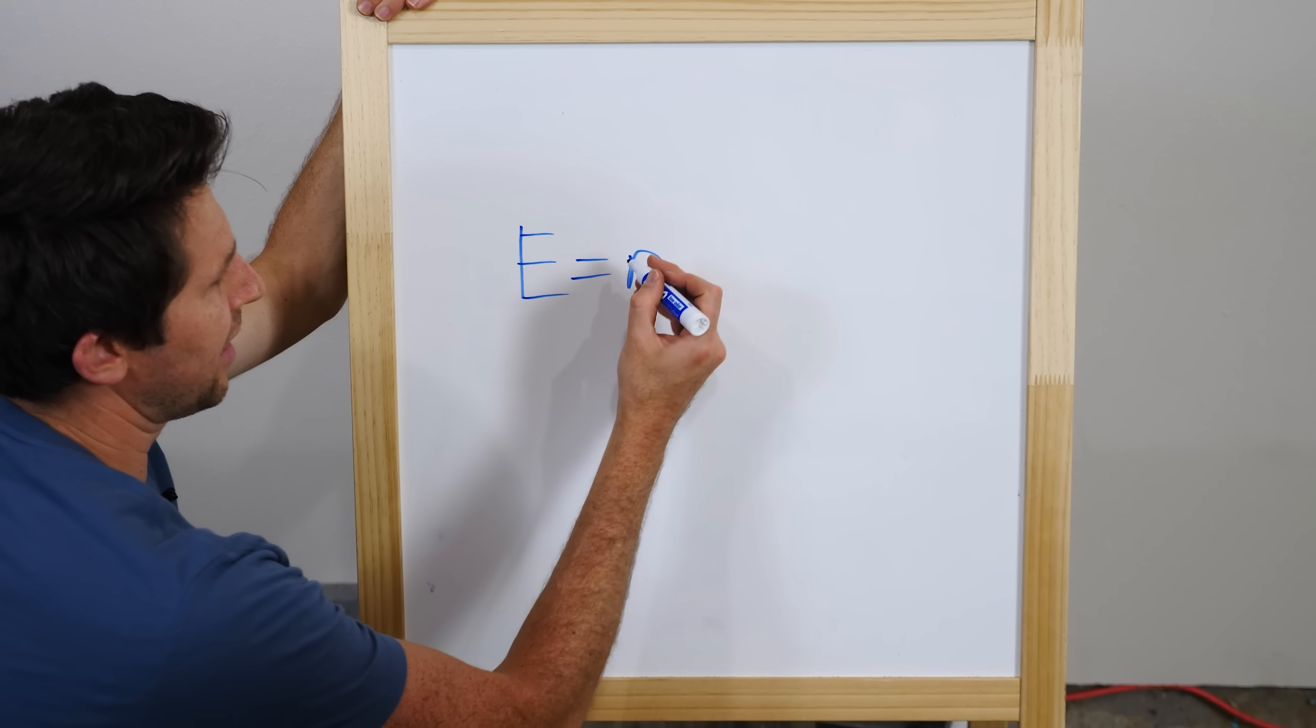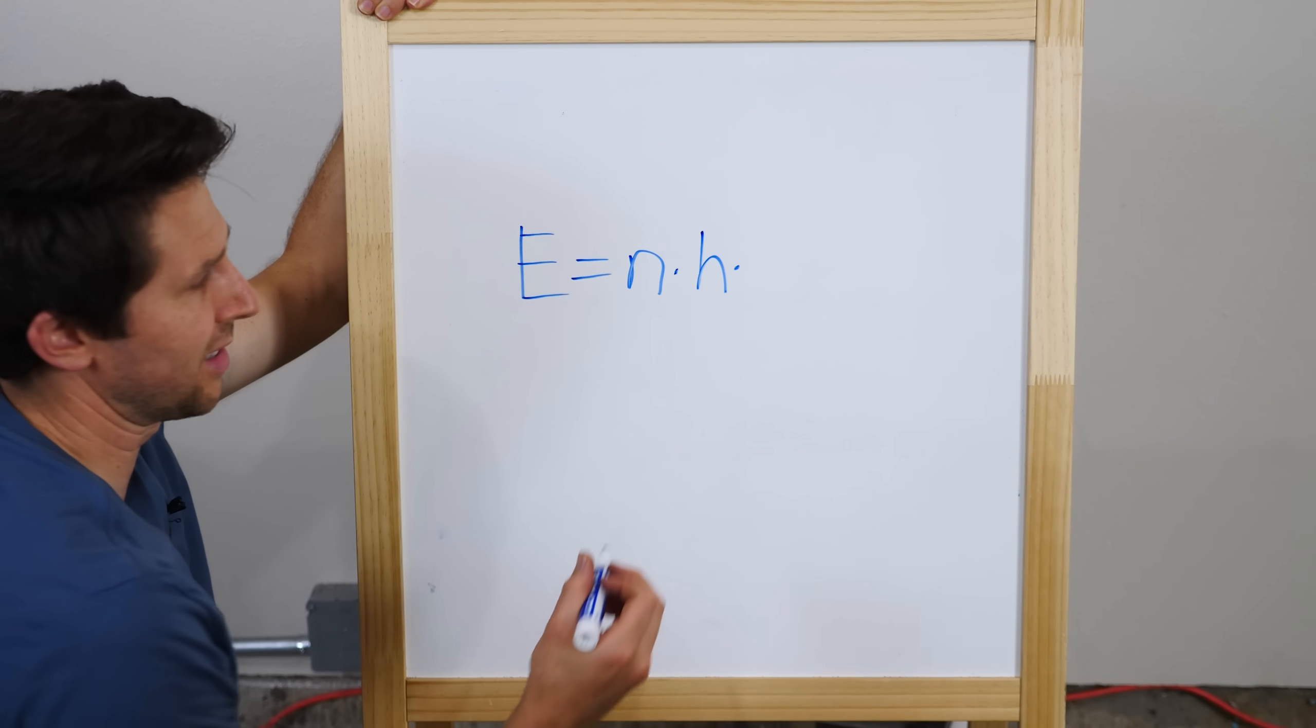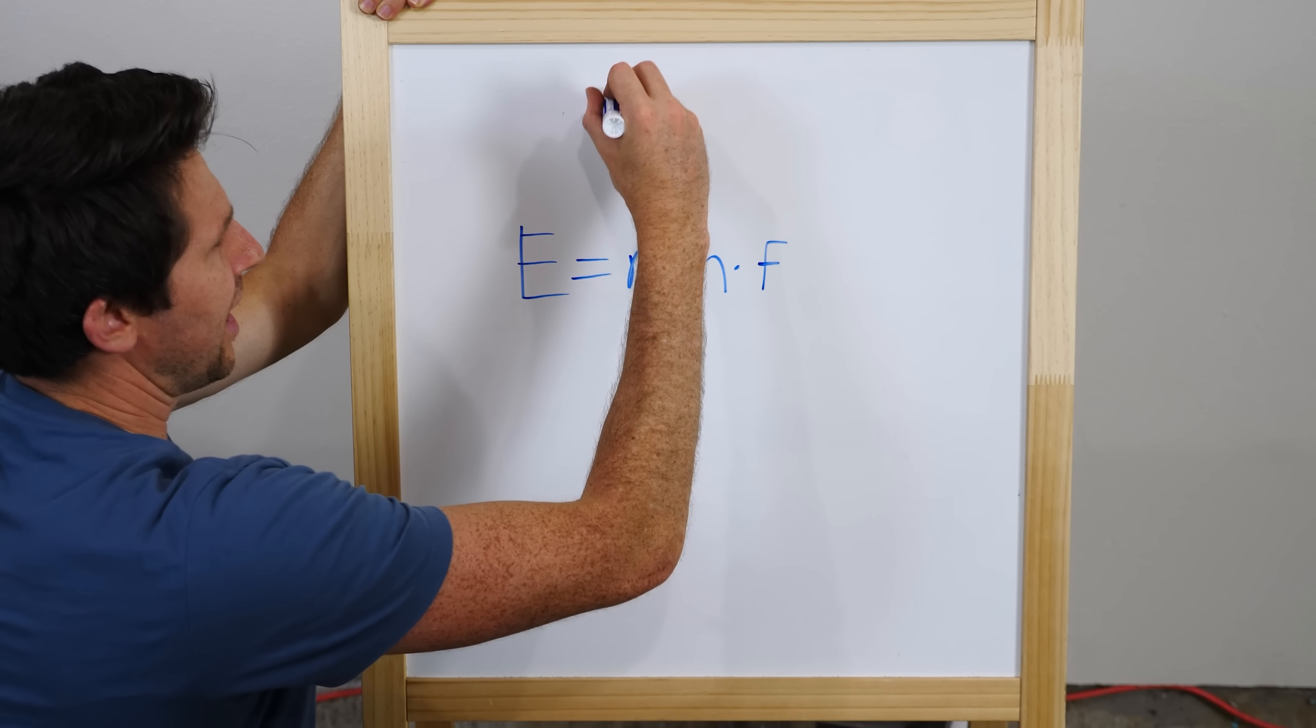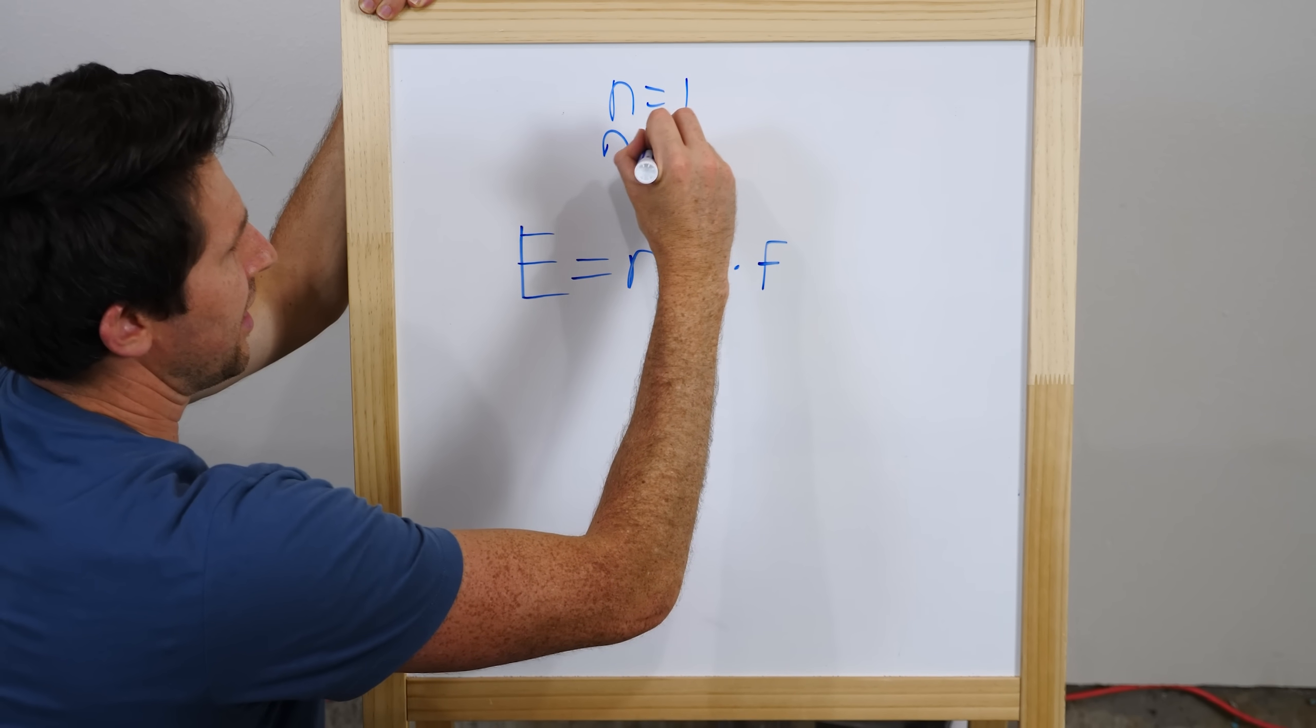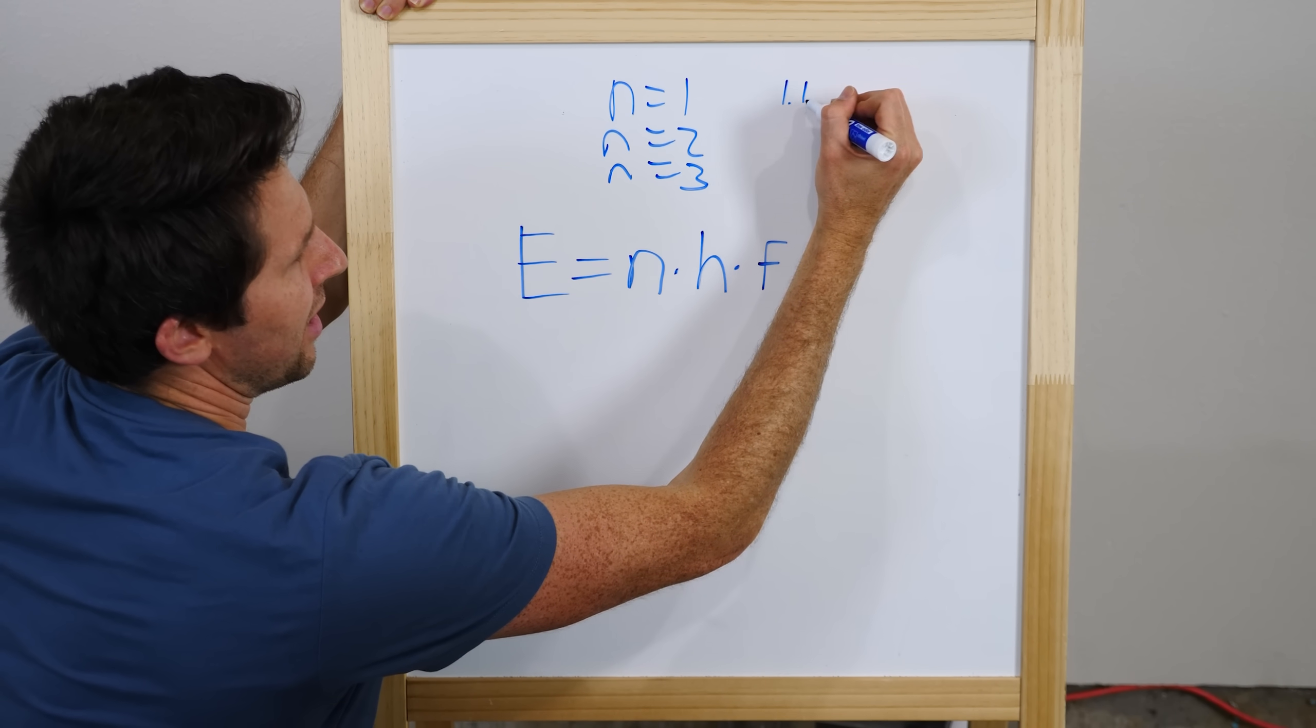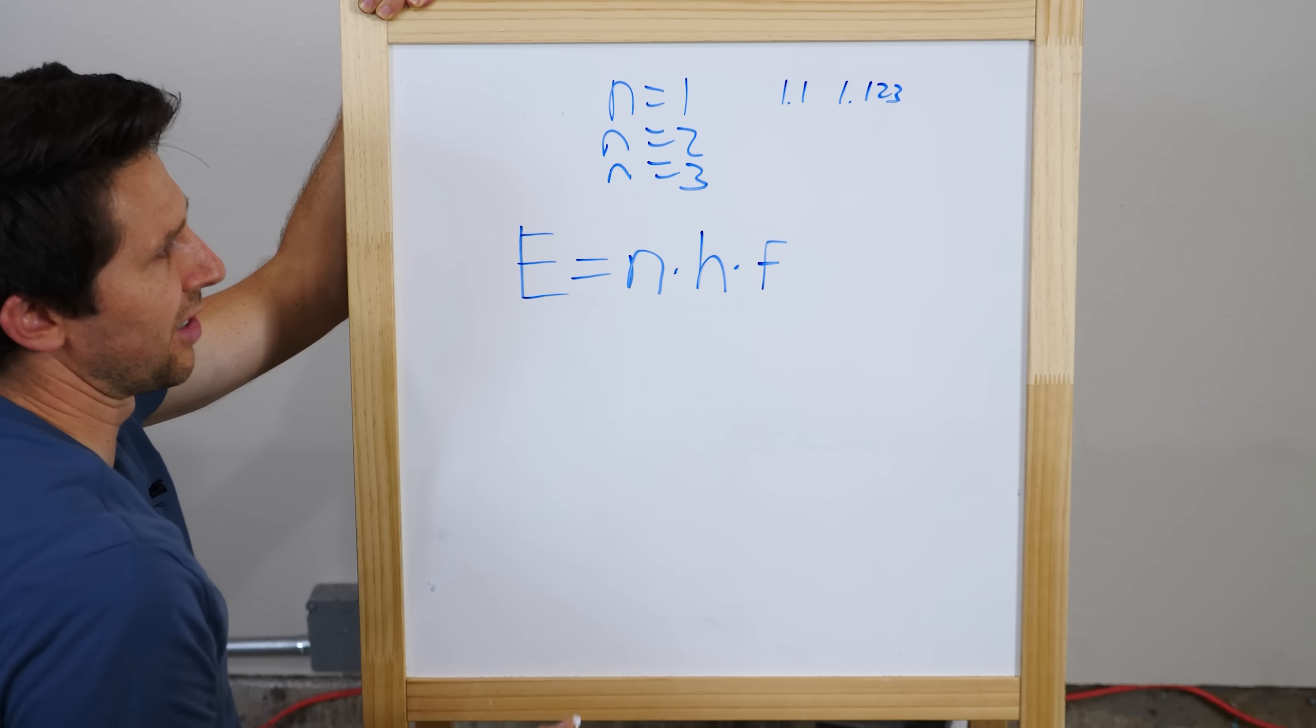So Planck said that energy is equal to some integer times H, which is called Planck's constant times frequency. And N has to be a whole number. So N can be one, N can be two, N can be three. But it can't be 1.1 or 1.123. It has to be a whole integer.